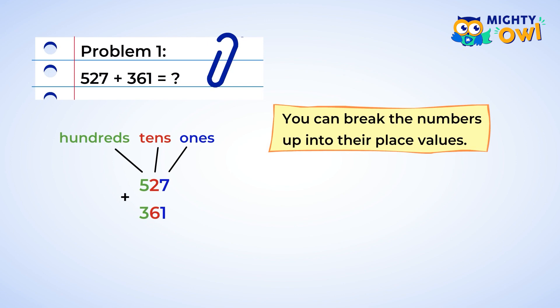527 can be broken up into five hundreds, two tens, and seven ones. In other words, we would have five hundred plus twenty plus seven. The number we are going to add to it is 361. And this can be broken down into three hundreds, six tens, and one one, or three hundred plus sixty plus one.